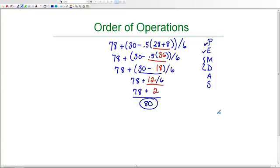So the final answer is 80. So this example was to demonstrate what happens when you have a set of parentheses nested within another set of parentheses. You always work from the inside out in this situation and make sure that you get rid of all the parentheses before you continue moving on using PEMDAS.